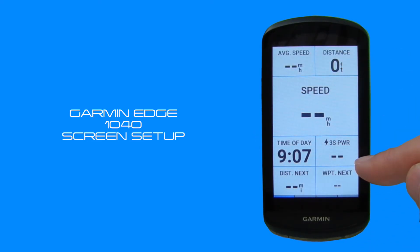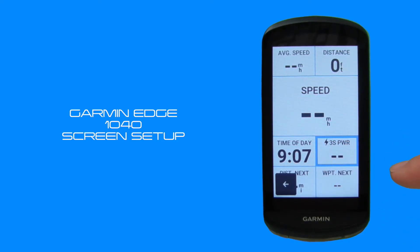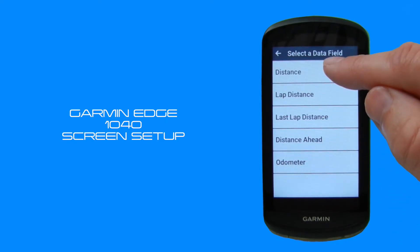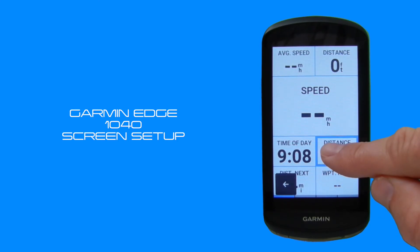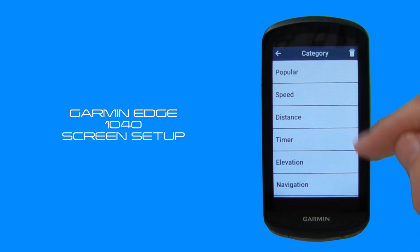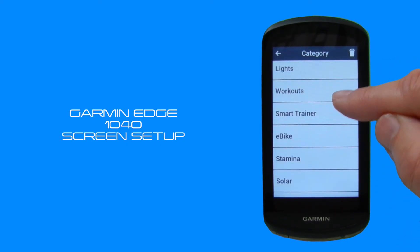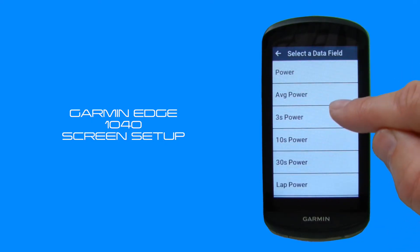Scrolling back to our main data page — and you can scroll in both directions — a handy little tip is if you tap and hold you can highlight a data field whilst undertaking a ride. Tap it again and it brings up the data field categories, allowing you to choose to update on the fly. That's a handy way of changing a data field without having to stop and go all the way through the menus. And in a few short minutes, that's how to update the data fields on your Garmin Edge 1040.